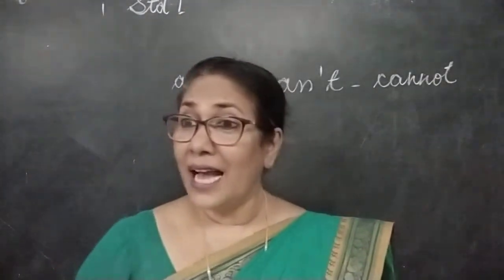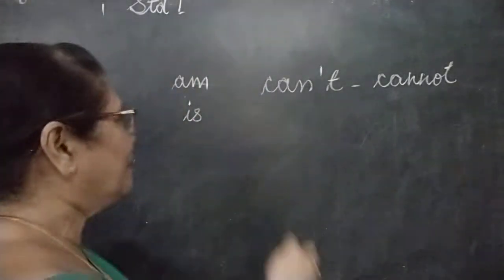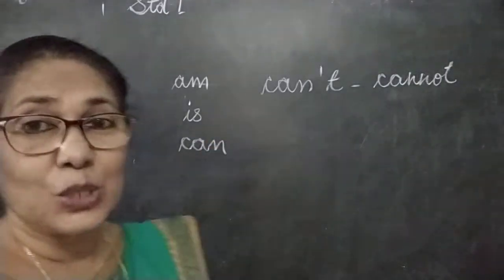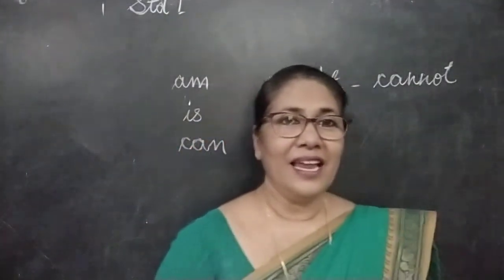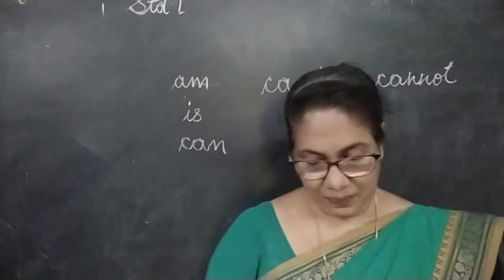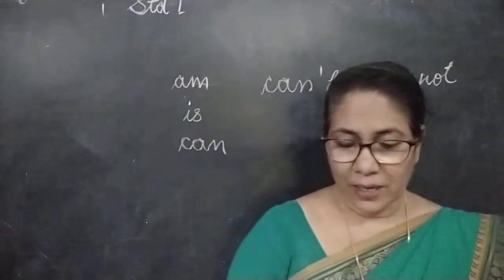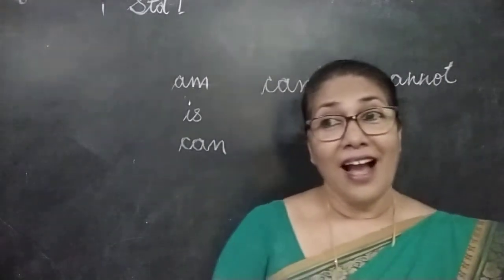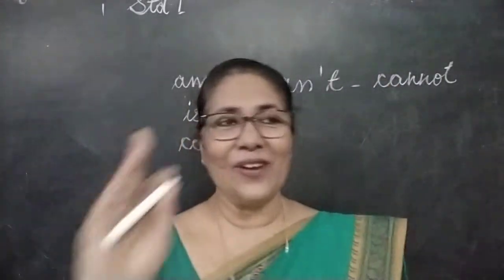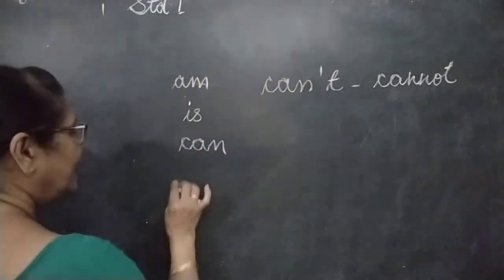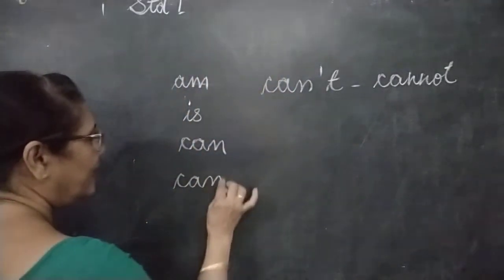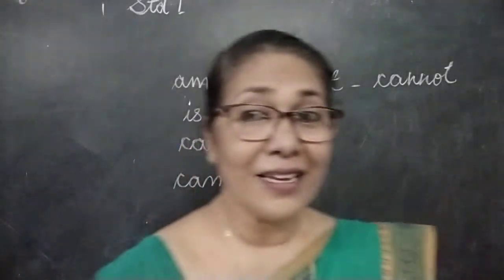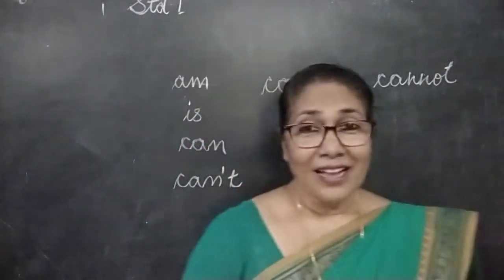I dash swim — I can swim. Yes, C-A-N, I can swim. Very good. What's the next one? I dash run fast — I can't. Yes, very good. C-A-N-T, I can't run fast.